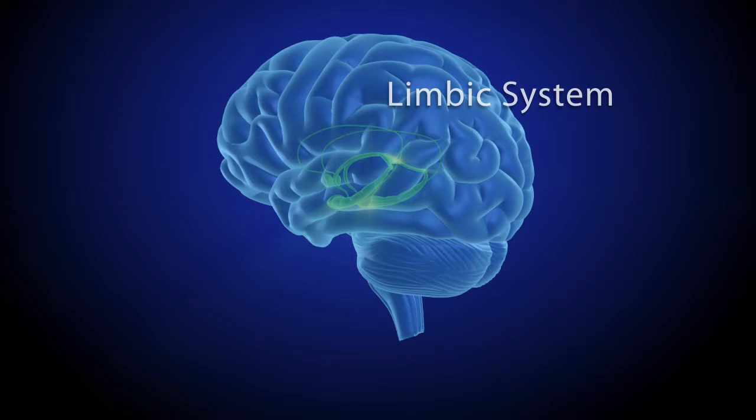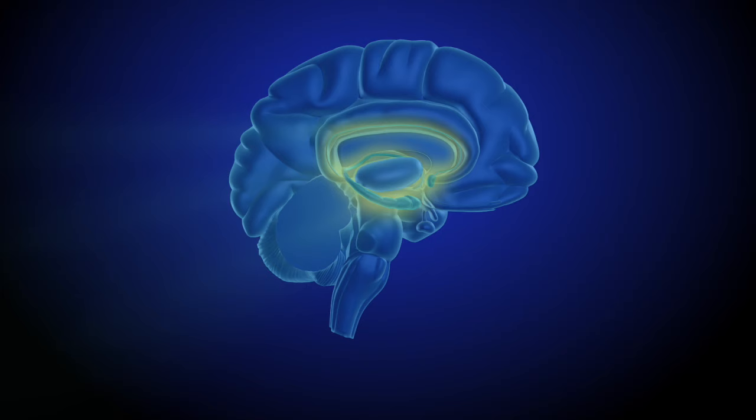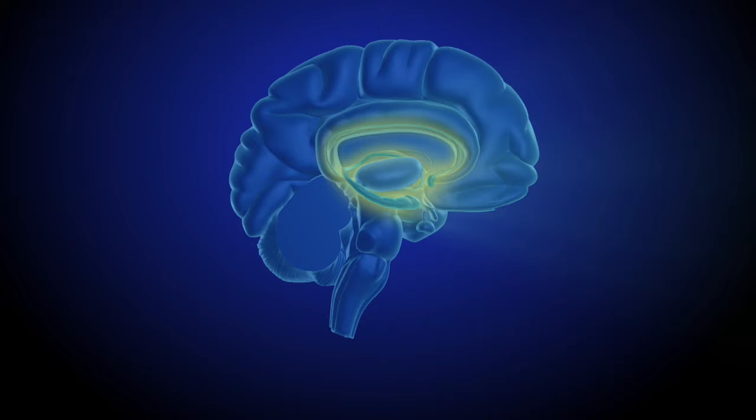Deep within the brain is a set of structures called the limbic system. The limbic system contains the brain's reward circuit or pathway. The reward circuit links together a number of brain structures that control and regulate our ability to feel pleasure.